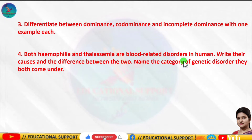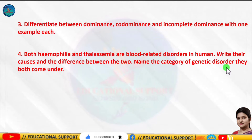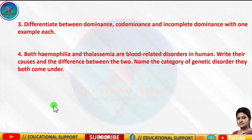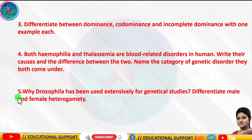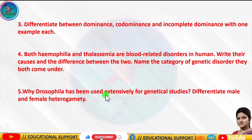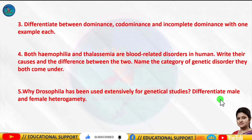Question number four: Both hemophilia and thalassemia are blood-related disorders in humans. Write their causes and the differences between the two. Name the category of genetic disorder they both come under.